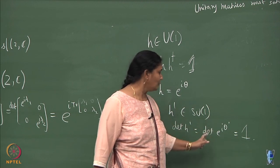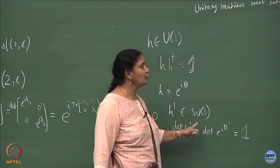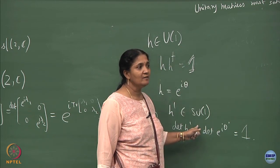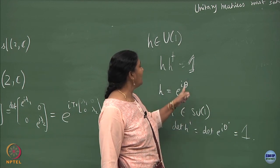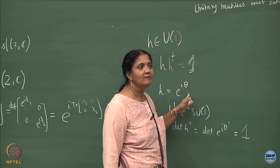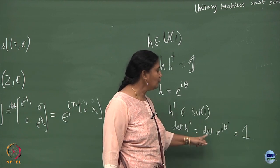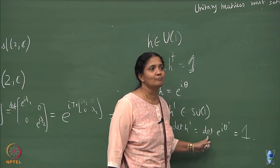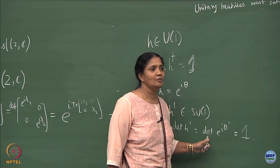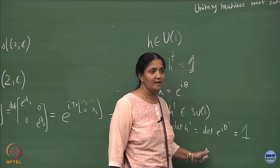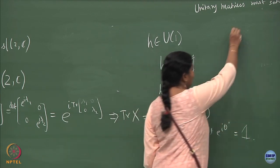For SU1, the element's parameter is forced to be 0, so there is no parameter space — it is just one point. Going from U1 to SU1, the number of parameters which was 1 got reduced to 0. Now let us do it for SU2.